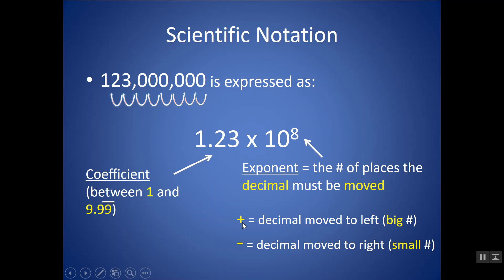This exponent is always going to be a positive number if the decimal was moved to the left when creating the coefficient. How I like to think of it: it's going to be a positive number if you started with a very big number. So anything with a positive exponent represents a really large number — something larger than 1, like 123 million. You're going to have a negative exponent if the decimal was moved to the right, or essentially if you have a number that is much less than 1.